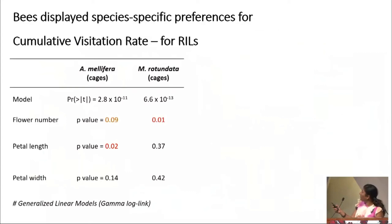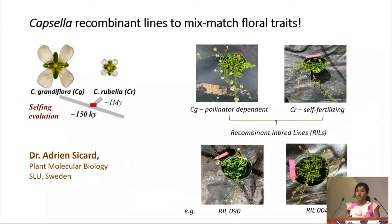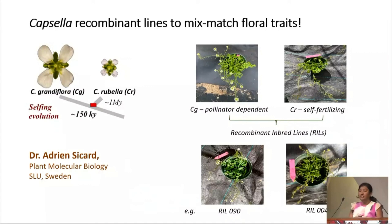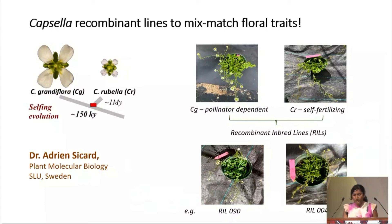From there, another species called Capsella rubella has evolved with changing floral traits. By crossing these two species — the pollinator-dependent and the self-fertilizing — they have developed a series of recombinant inbred lines. Using these recombinant inbred lines with specific floral traits, we are trying to understand how these floral traits attract different pollinators under different contexts.